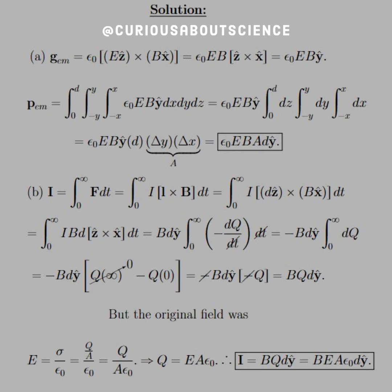The charge at infinity is clearly zero because it's draining. The charge originally is what we had to start with. The negative sign and the limits cancel out, and we're left with BQd in the ŷ direction.